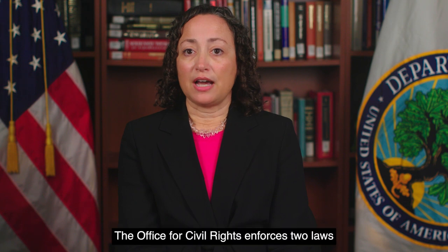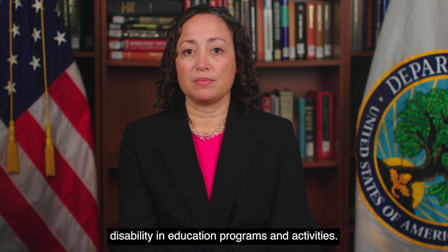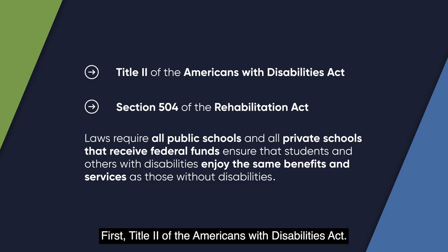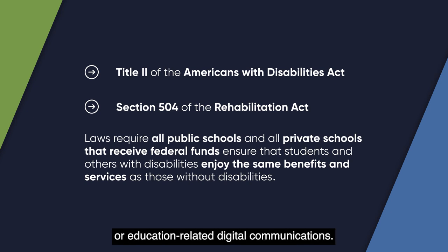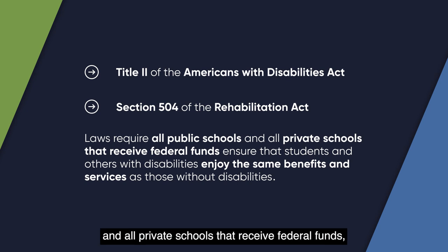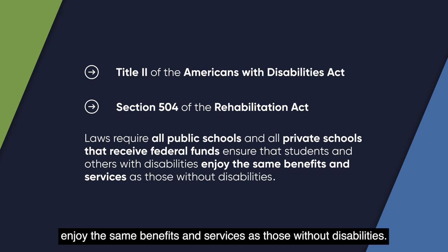In addition to technology, the law plays an important role here. The Office for Civil Rights enforces two laws that prohibit discrimination based on disability in education programs and activities: first, Title II of the Americans with Disabilities Act, and second, Section 504 of the Rehabilitation Act. Both these laws predate the Internet's wide use, so they don't specifically address online learning or education-related digital communications. But together, these laws require that all public schools and all private schools that receive federal funds ensure that students and others with disabilities enjoy the same benefits and services as those without disabilities.